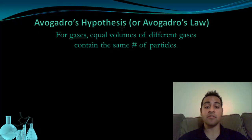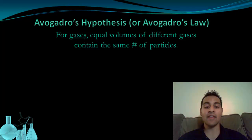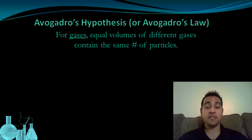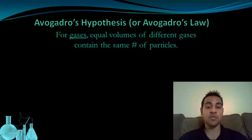Avogadro comes up with a hypothesis that we call Avogadro's hypothesis, or Avogadro's law — they can be used interchangeably. It says that for gases — only gases, not solids or liquids — equal volumes of different gases contain the same number of particles. This is a huge idea. The number of particles in a given sample of gas only depends on the volume of that gas, not on the size, type, or mass of the particles. It only depends on the volume.